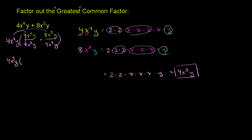Simplifying each expression: 4 cancels with 4, x to the fourth divided by x to the third is x, and y divided by y is 1. So you have x. Then 8 divided by 4 is 2, x to the third divided by x to the third is 1, y divided by y is 1. So you're left with plus 2 — giving x plus 2.